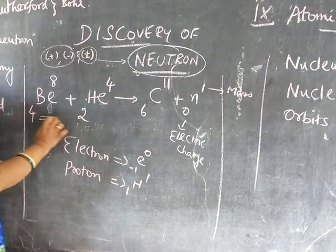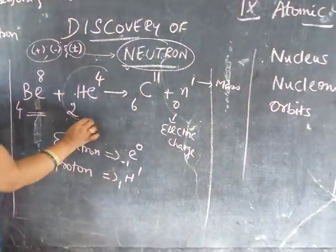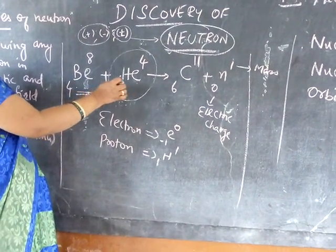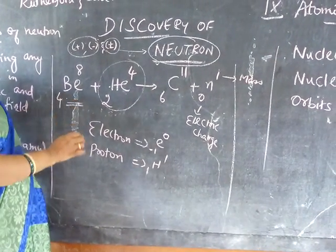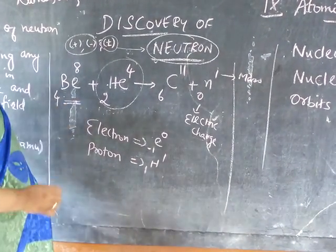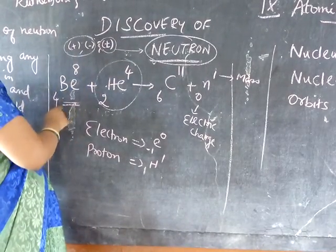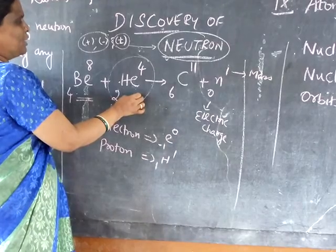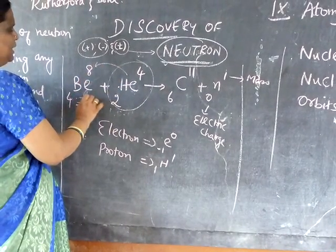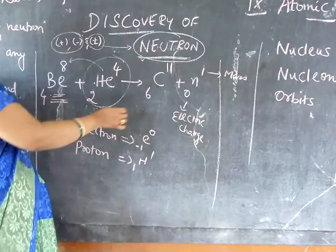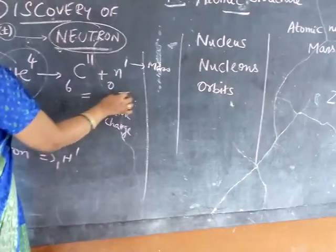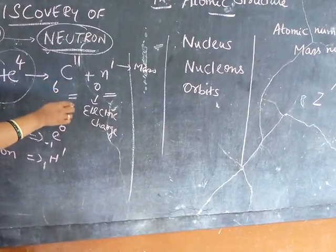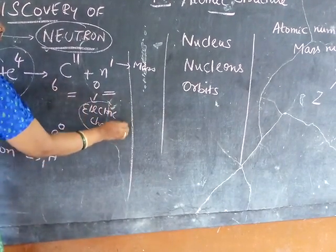Chadwick has taken beryllium and alpha rays are passed through this beryllium. See, this equation is not given in your textbook, but if you see this equation, you know how it is formed. For that purpose we have written it. When alpha rays are passed through beryllium, carbon is formed along with neutron.